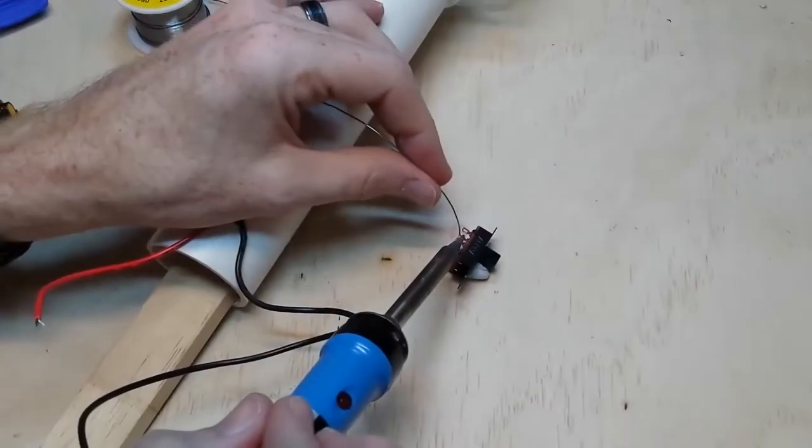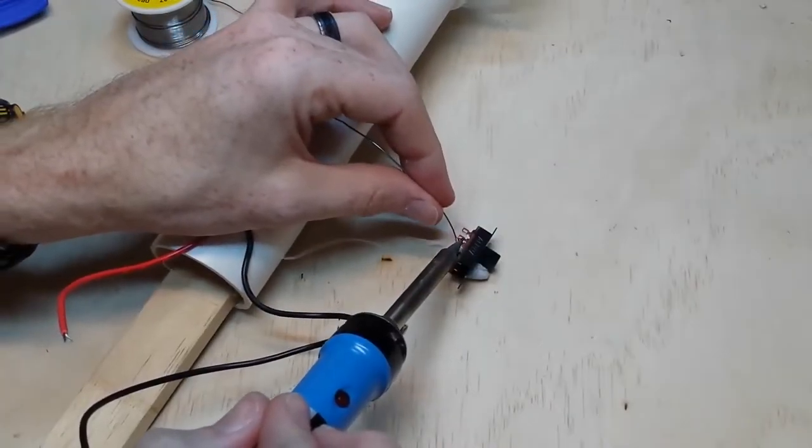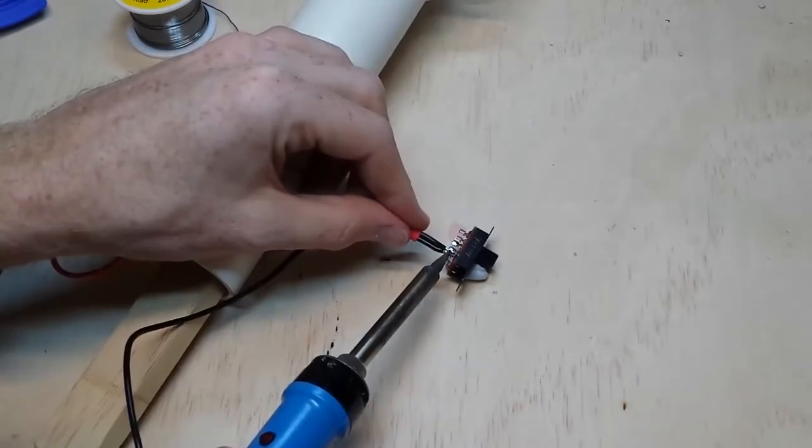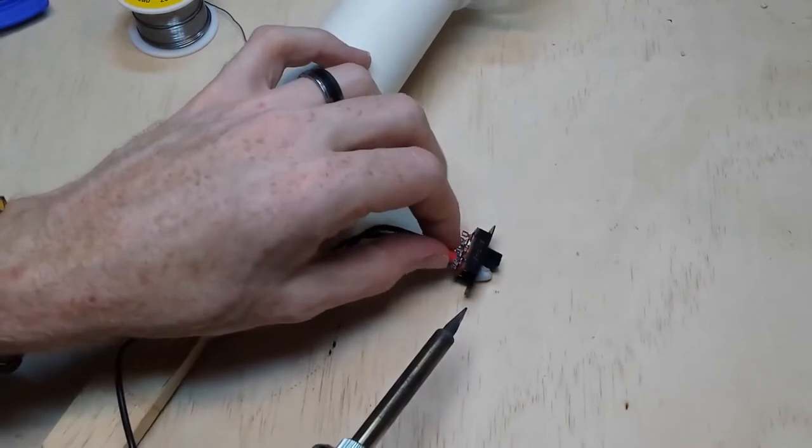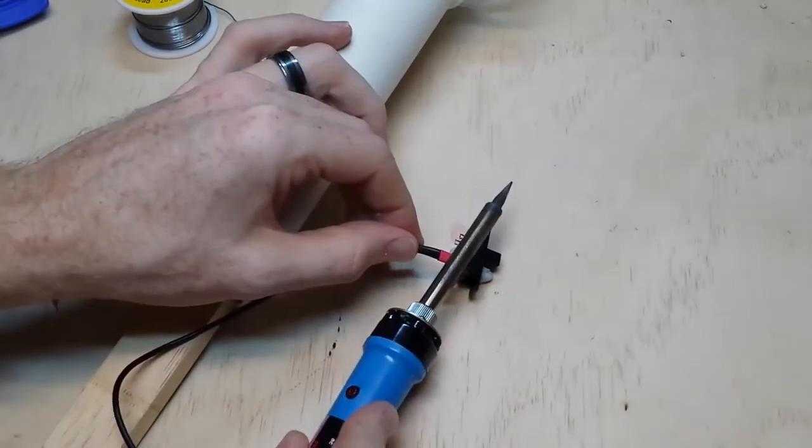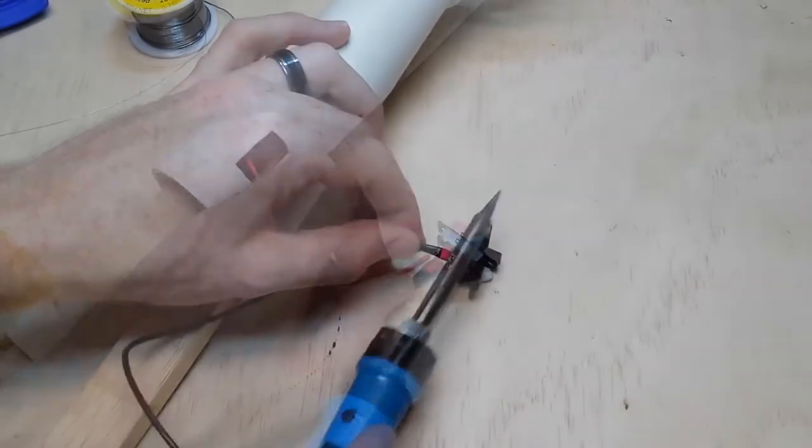And the plug will then connect to the lid once it's done later. I connect the black wire from the ion generator to the long black wire we just cut. Be sure to place shrink tube over the top.